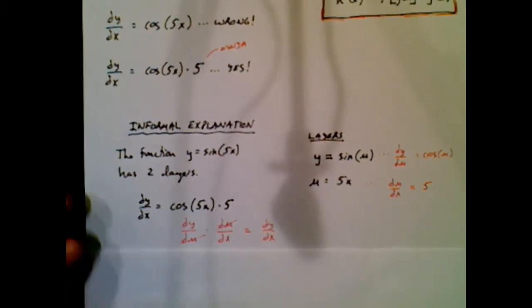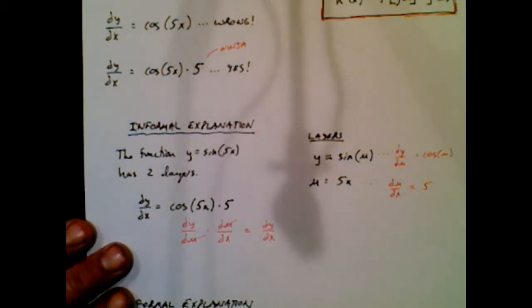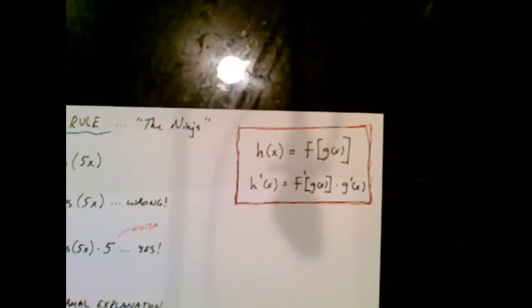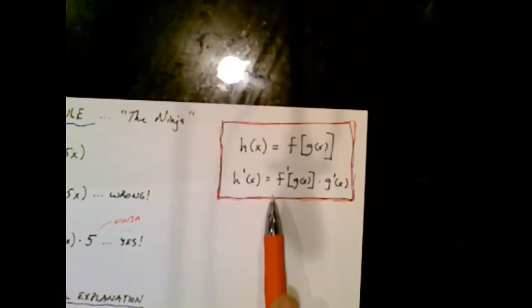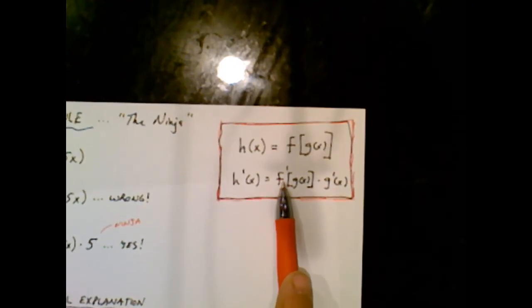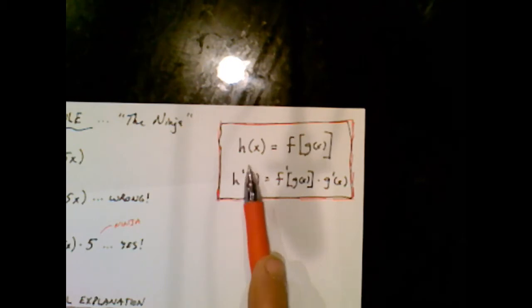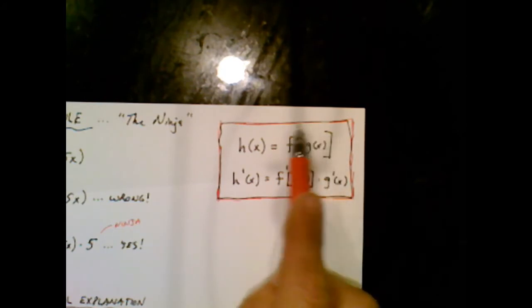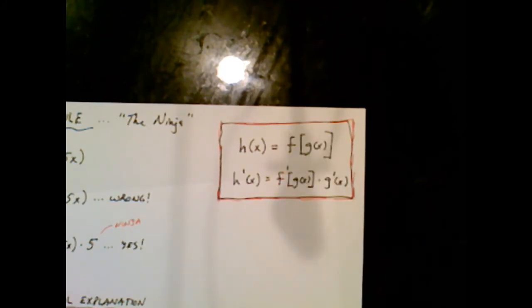All right, sorry, this is a long video, because now I owe it to you to give you the formal explanation, because that's how a college professor or an AP test writer might like to do this. So before I get to the formal explanation, remember that this is the rule for the ninja or the chain rule. And technically, this occurs when we have a composite function. A composite function is when one function is living inside of another. We've done that in Algebra 2.